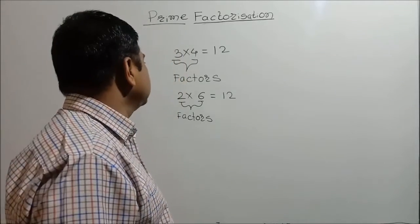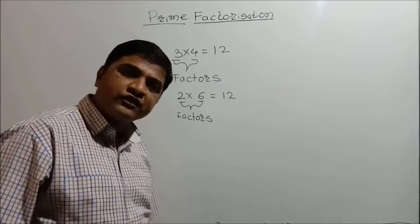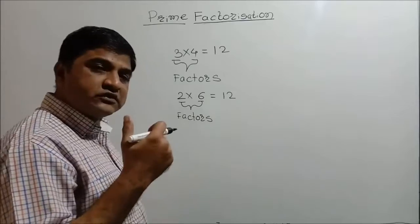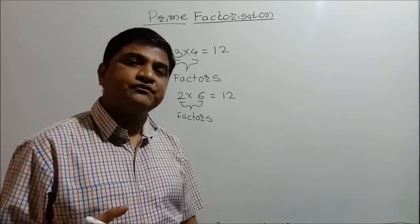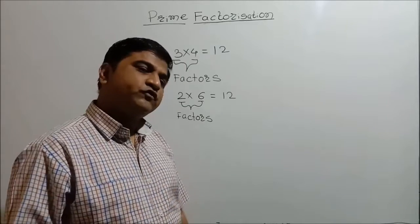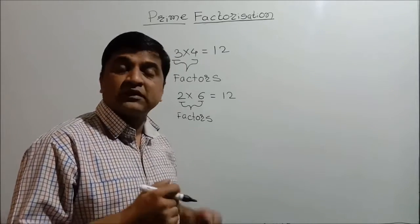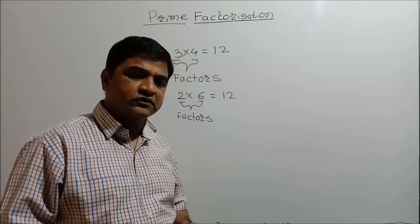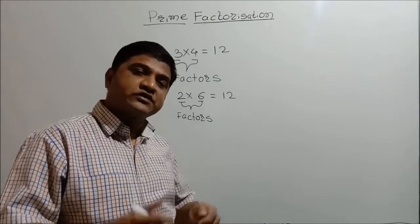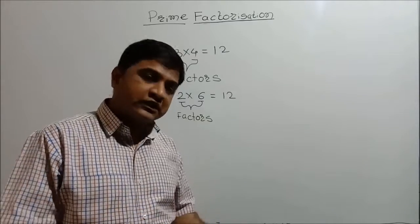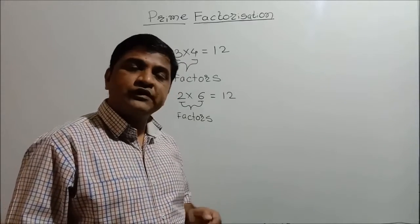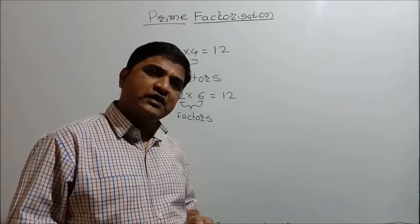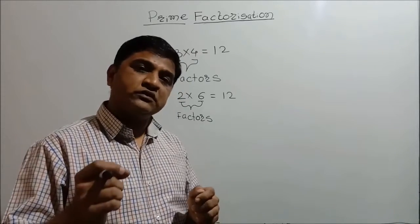In the previous video, we have seen how to find the factors of a number by the listing method, and how to find out HCF and LCM using this listing method. But the listing method is time-consuming and cumbersome, so we take the help of prime numbers. We have seen what prime numbers are and how to find them from 1 to 100 using the Sieve of Eratosthenes. Prime numbers are numbers which can be divided by 1 and the number itself.